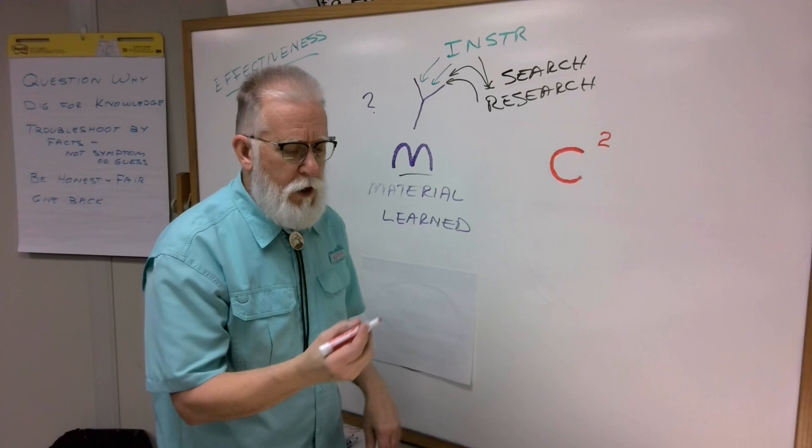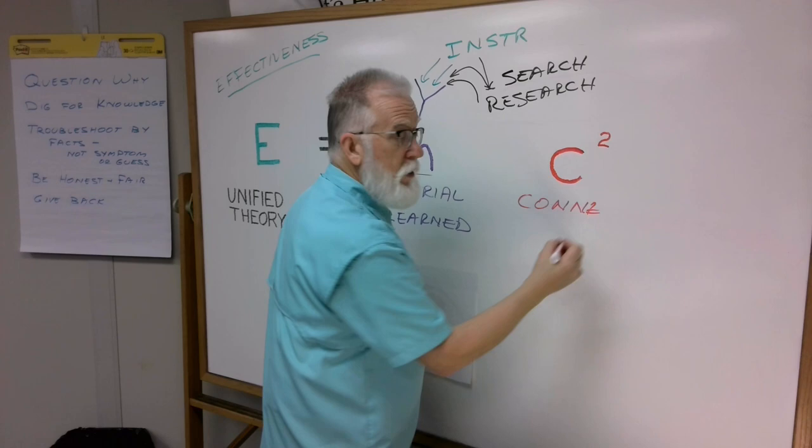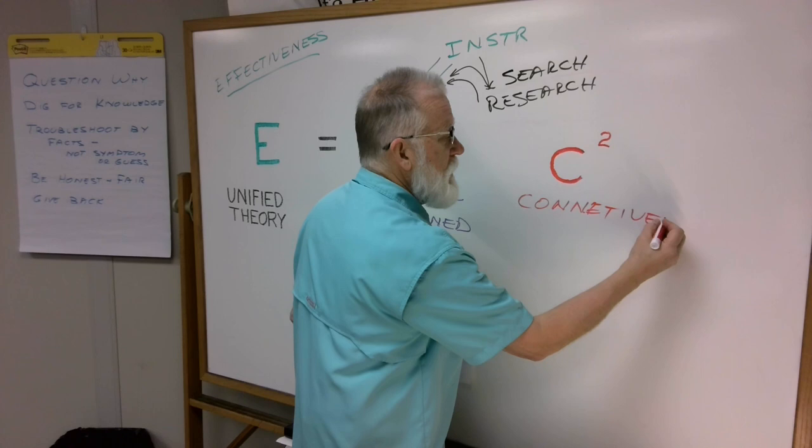Then we come down to C squared. C is what I call connectiveness. And yes, I think I made that word up. It's relating knowledge.